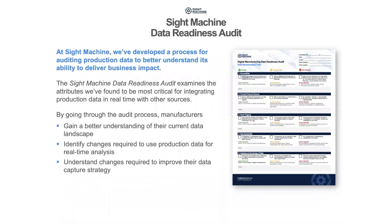To help manufacturers assess their readiness, SiteMachine has created a questionnaire that addresses the five categories presented here: accessibility, format, tag mapping, data reliability, and institutional knowledge. This is an important framework and a critical first step to asking yourselves what your current state is, and if you aren't ready, what steps you need to take in order to support a manufacturing analytics initiative.